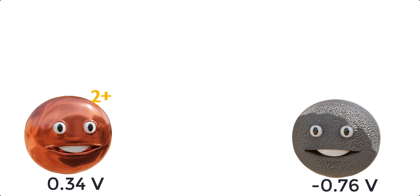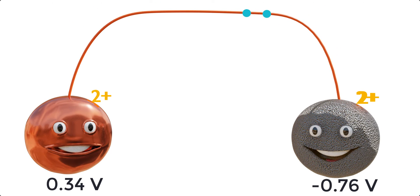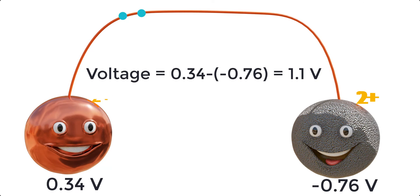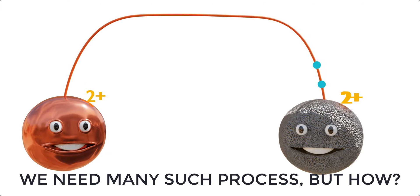Therefore, if we connect a zinc atom with a copper ion, a natural electron flow will occur, and we will be able to note a voltage of 1.1 volts. Both of the atoms are happy with this process. The challenge is to produce copper ions and zinc atoms in a sustainable way.